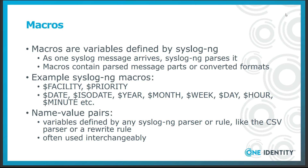In earlier parts of my syslog-ng tutorial, you might have heard me mention name-value pairs. How are they different from macros? Name-value pairs are variables defined by a syslog-ng parser or a rule, like the CSV parser or a rewrite rule. The difference is minimal, and the two terms are often used interchangeably.